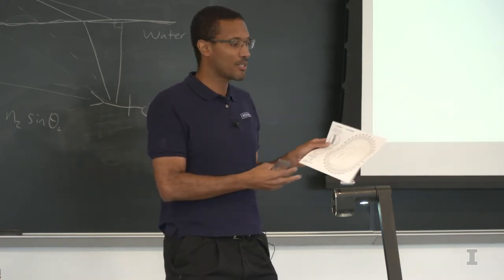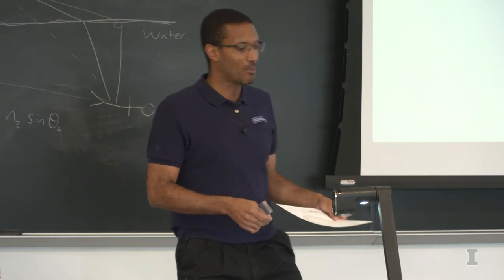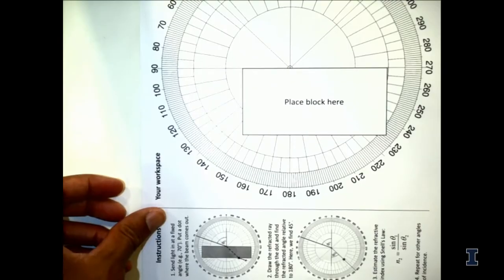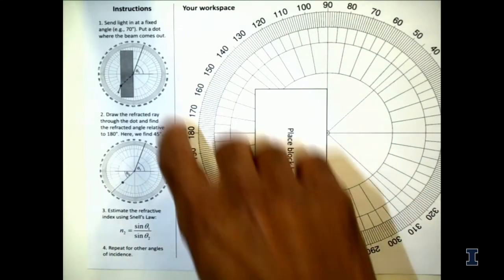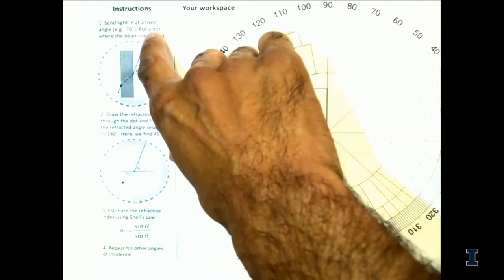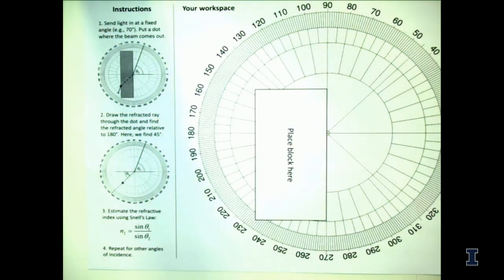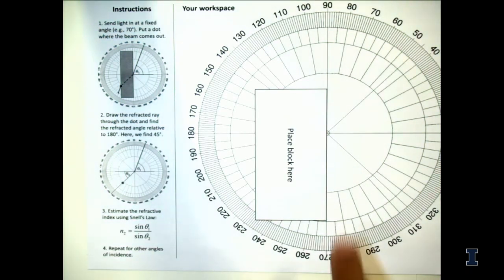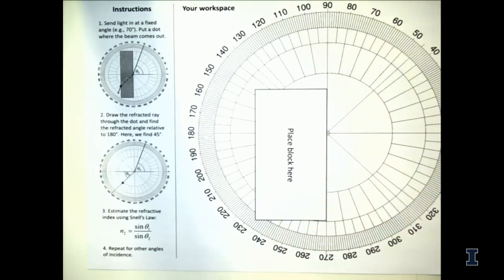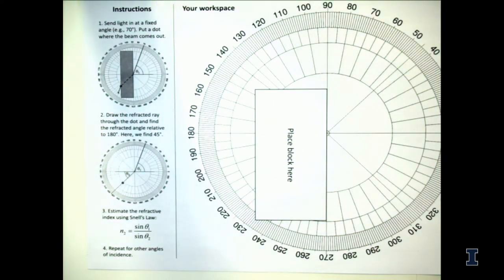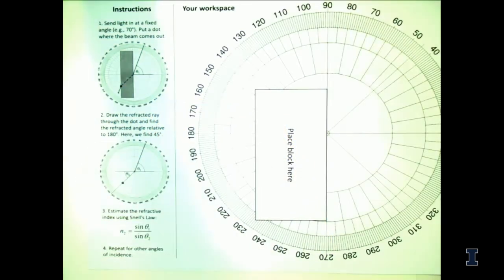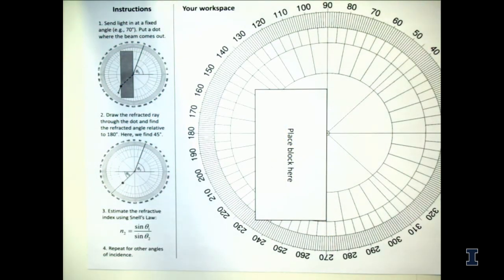The instructions for the activity are printed directly on the sheet. You're going to send light in at a fixed angle with your laser level, and it's important that the light hits the block exactly at the center of the protractor so that you measure angles correctly. The light is going to be bent — similar to how the lifeguard changes angle based on differences in speed.